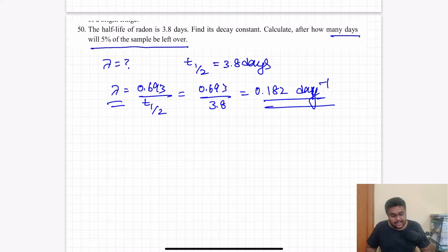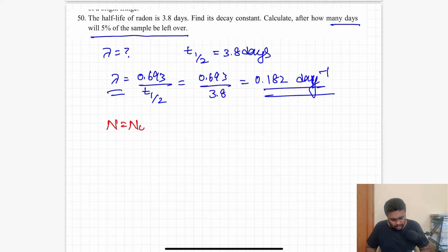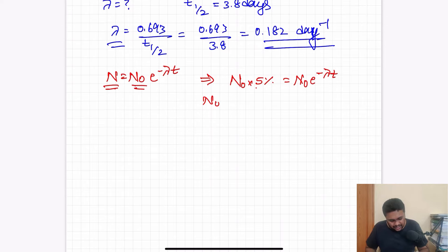After how many days will 5% of the sample be left over? The formula is N is equal to N0 e power minus lambda t. After how many days 5% of the actual sample, I have to consider LHS as N0 into 5% is equal to N0 e power minus lambda t. Percentage is 5 by 100 is equal to N0 e power minus lambda t. N0 cancels. 5 by 100 is 1 by 20 is equal to e power minus lambda t.